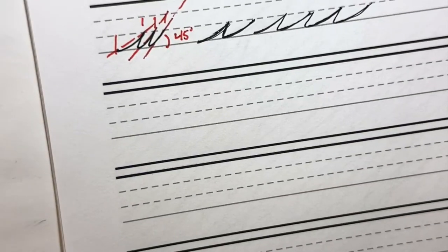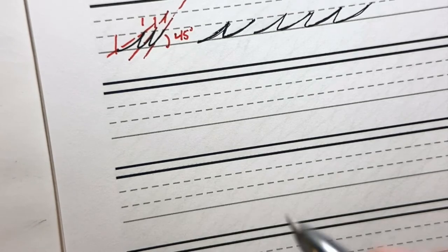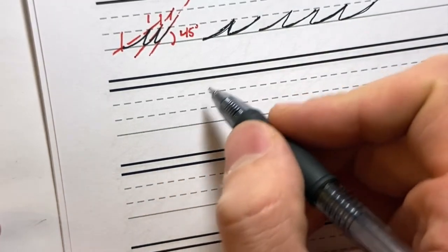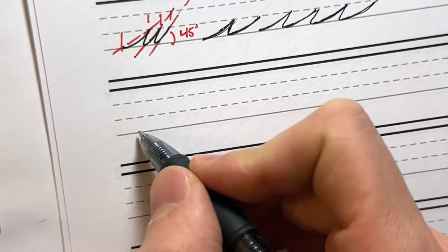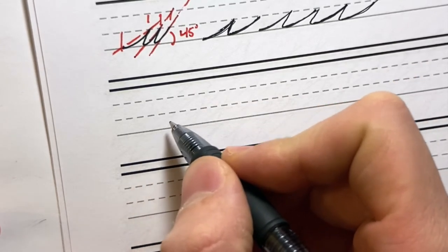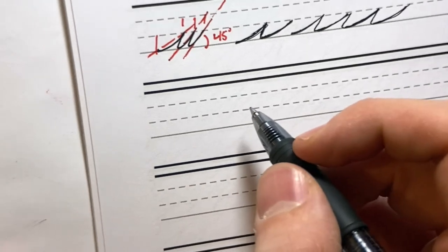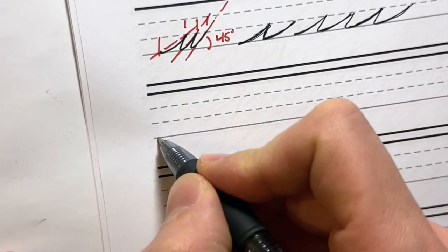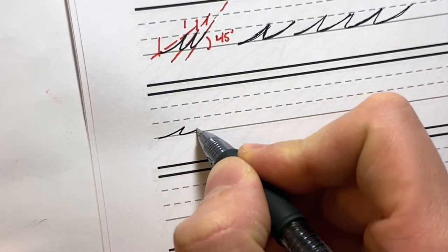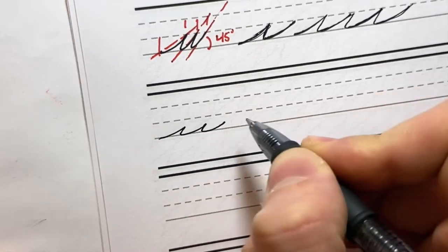Now, a couple of ways you can get around this or work on this problem, if you're just starting out. One is to size down the writing. So this is a pretty big x-height, it's like over a quarter of an inch high, so pretty big. You might want to try writing a little smaller. And that makes it a little easier to space things out.